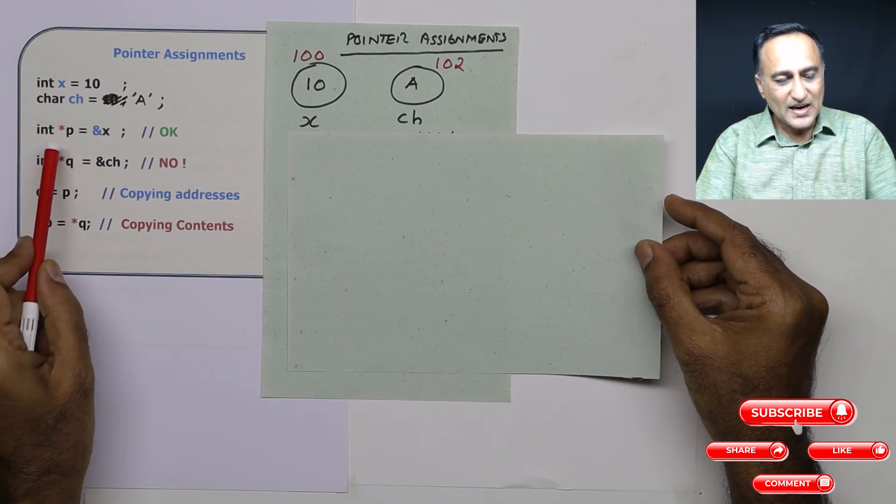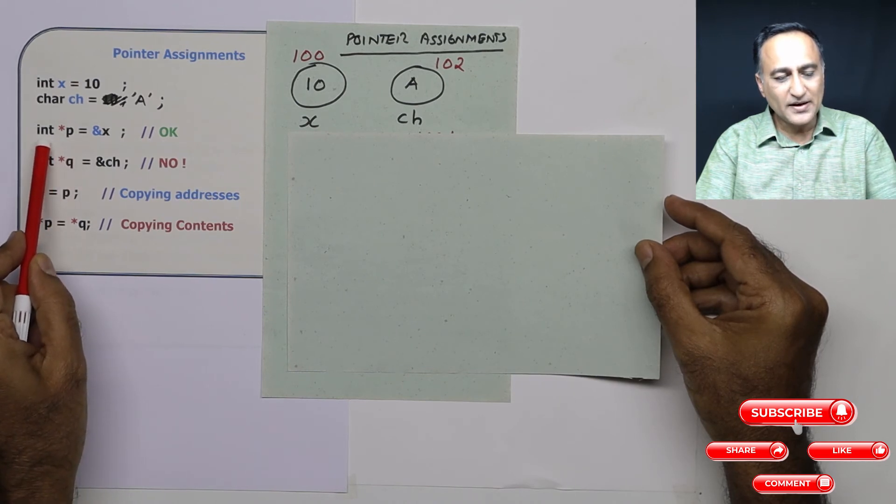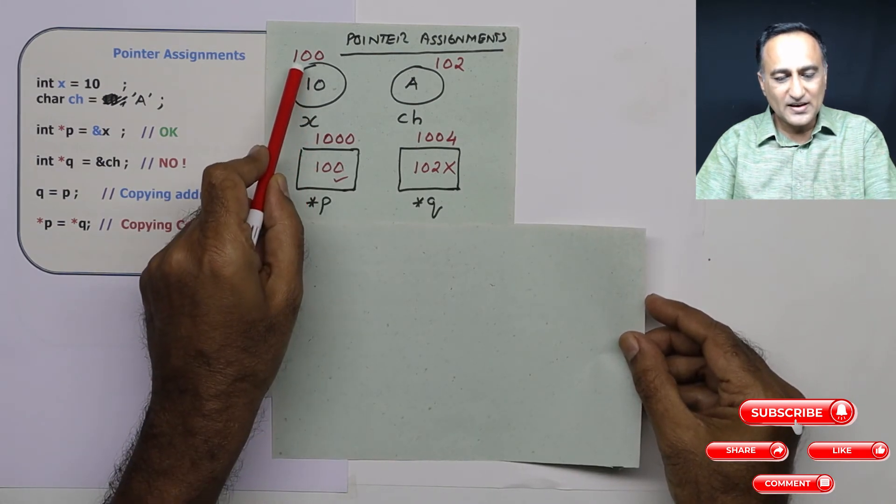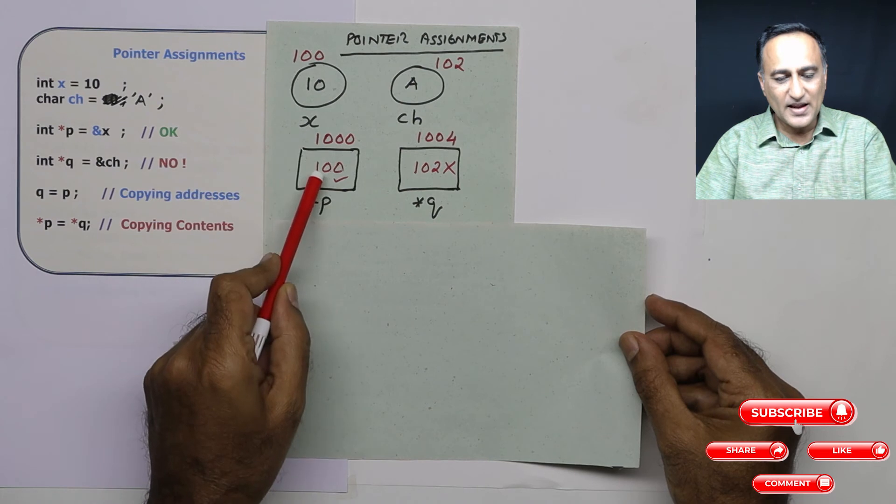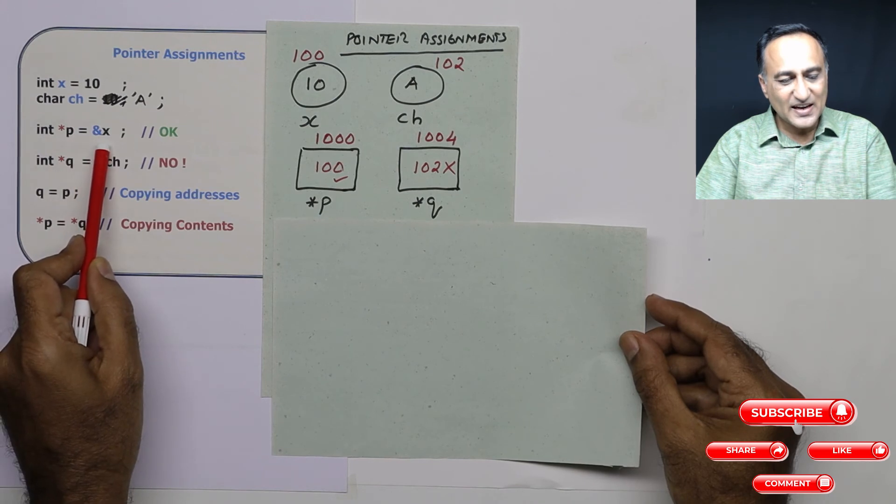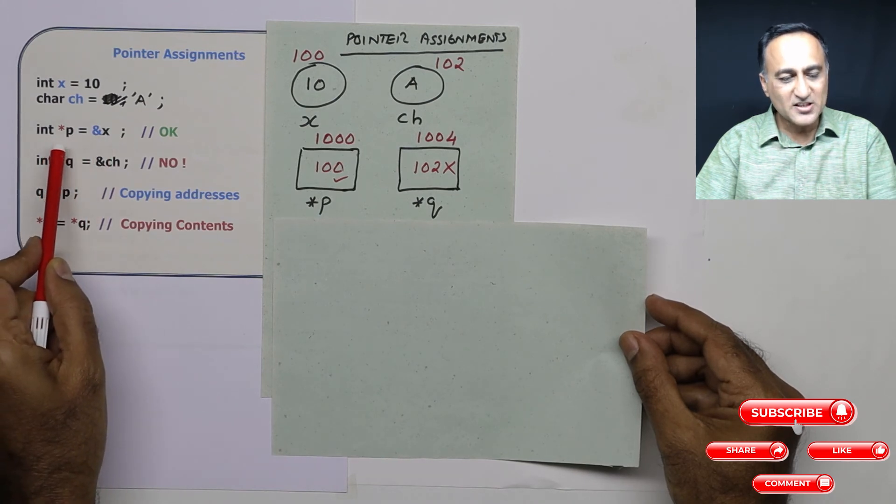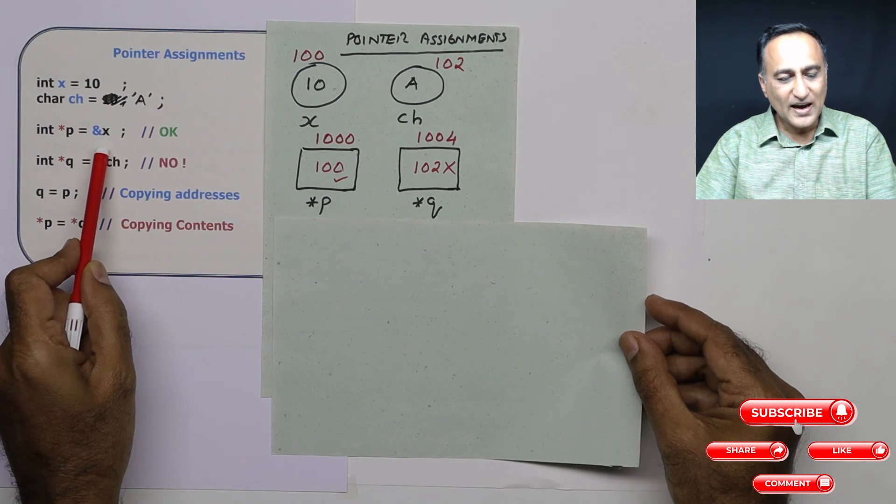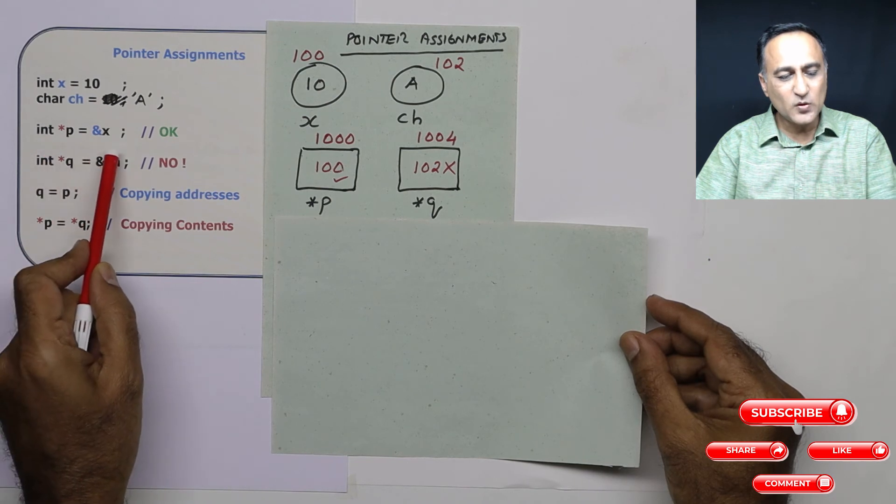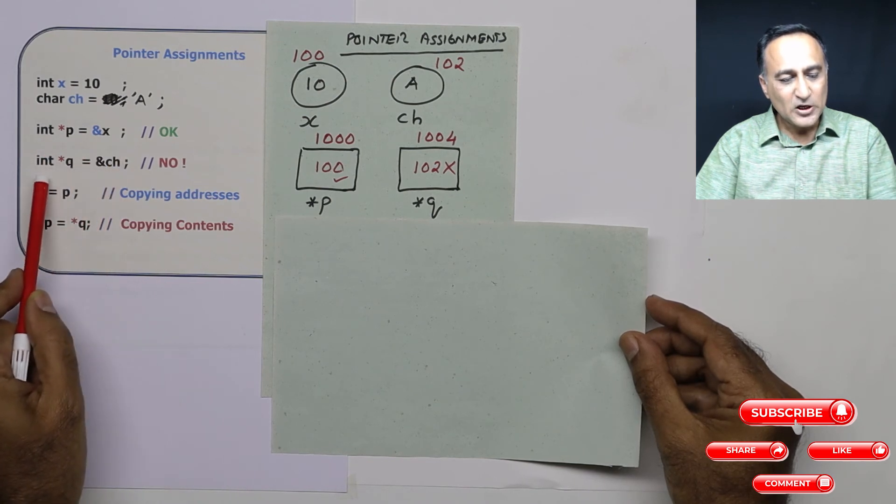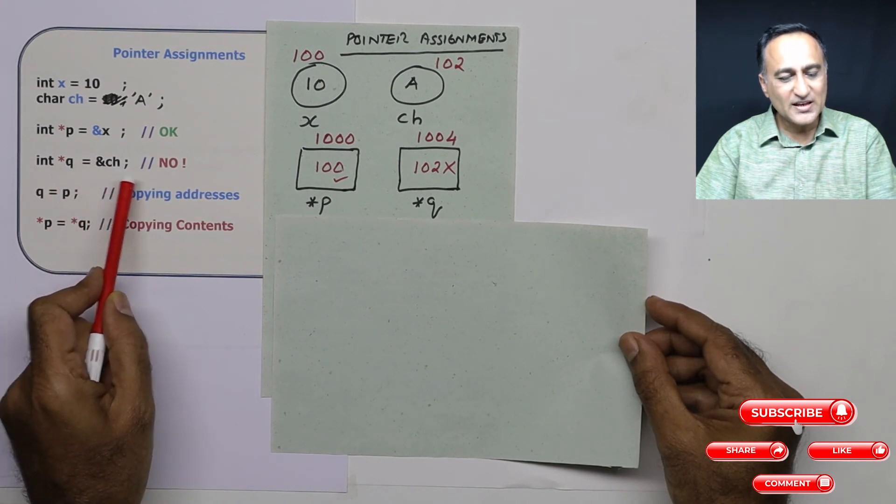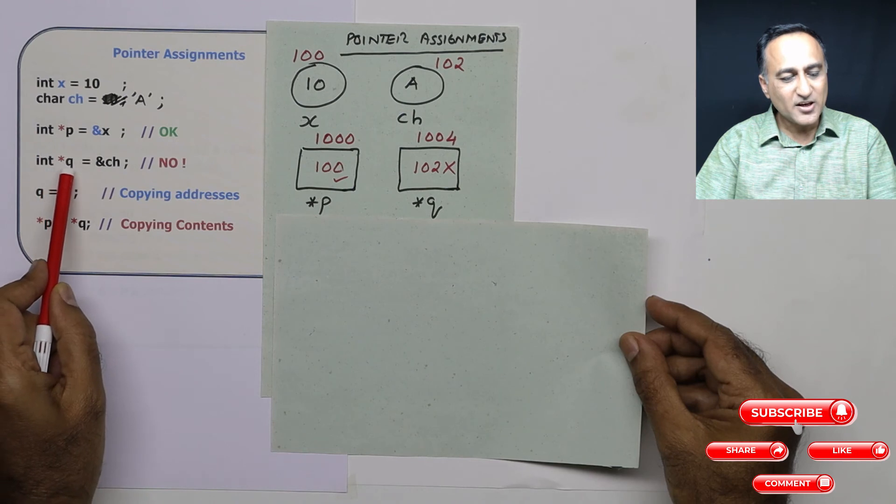Now what I have done is I have declared a pointer to an integer type of data which takes the address of x. So star p is going to contain the value 100. 100 happens to be the address of x. This is okay. I can initialize it at the time of variable declaration, at the time of pointer declaration, or I can just declare int star p equal to null and in the next step I can say p is equal to address of x.